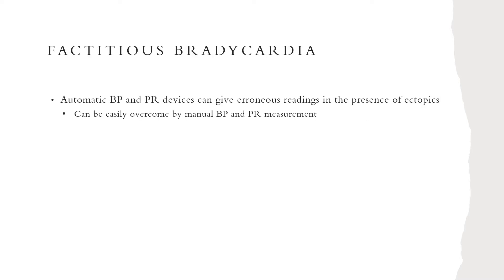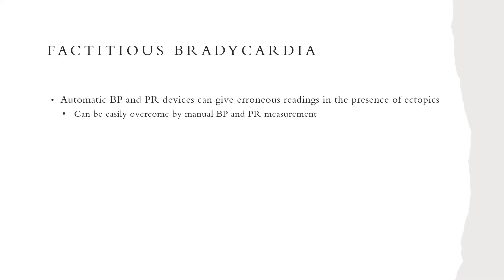Factitious bradycardia is probably one of the most common reasons for bradycardia referrals from primary care. It is important to note that automatic blood pressure machines can give erroneous readings in the presence of ectopics. However, this can be easily overcome by taking a manual blood pressure along with pulse rate, or if there is an ECG machine, this will confirm or refute the diagnosis of bradycardia.